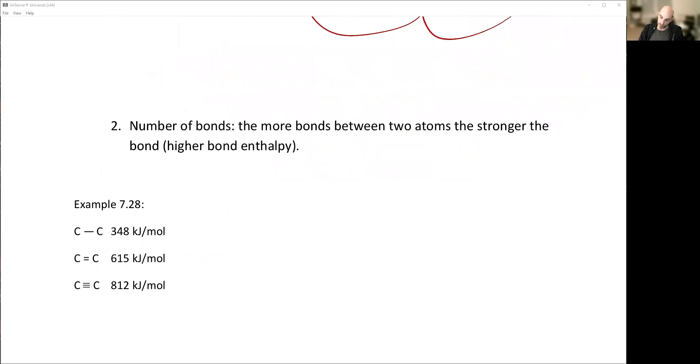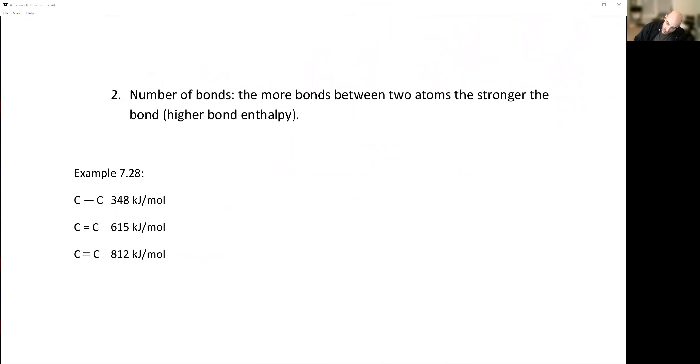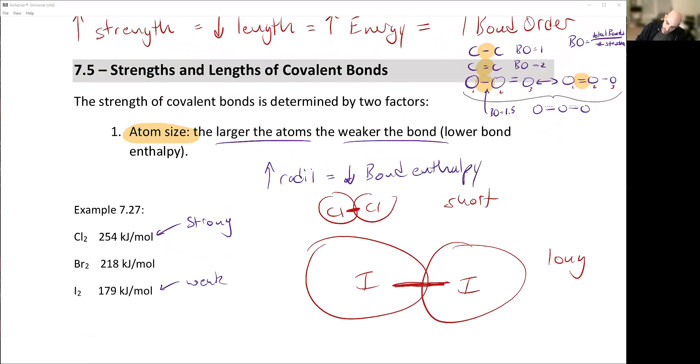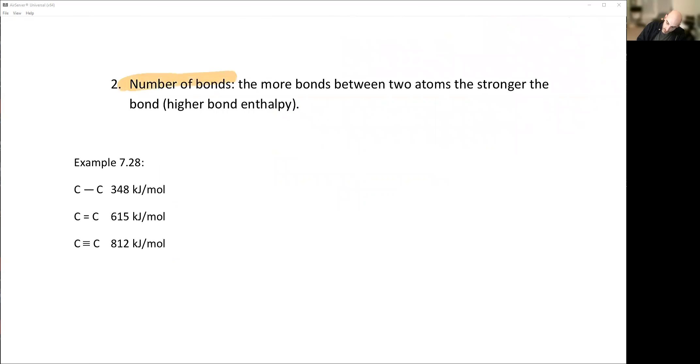The number of bonds between them is the second thing. So I just said that the size of the atom on either side. Now it's the number of bonds as well. So what is the bond order of this carbon? Length, bond order.